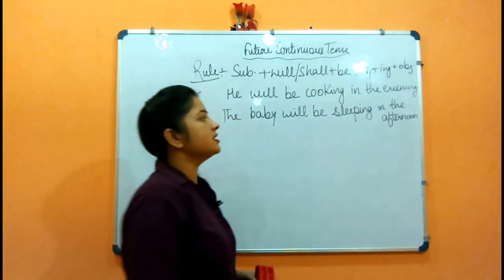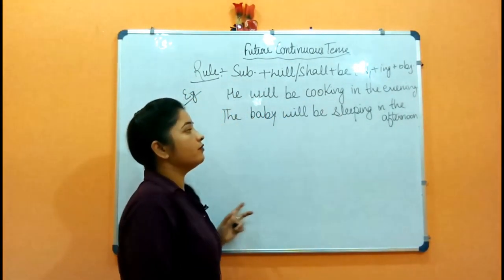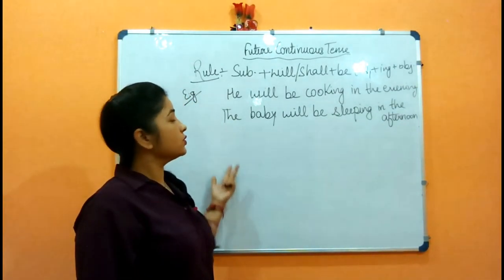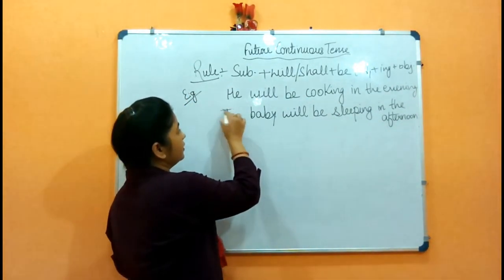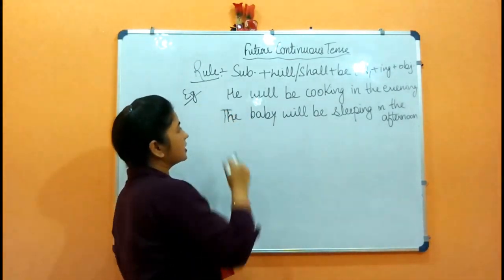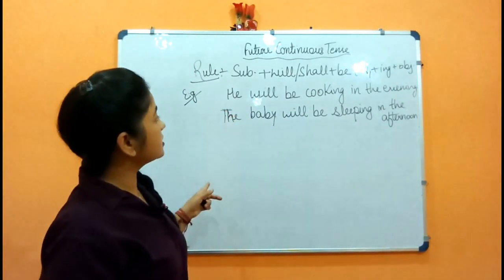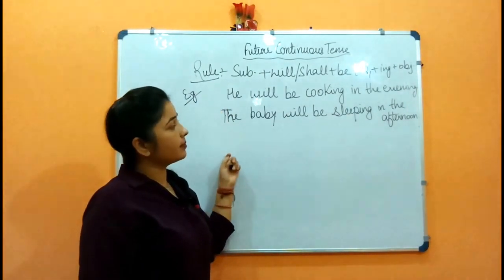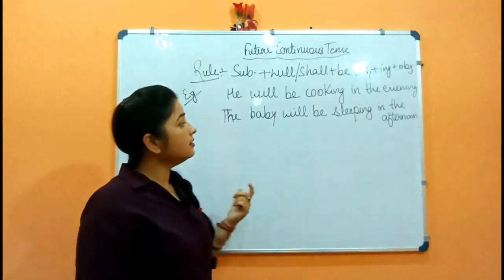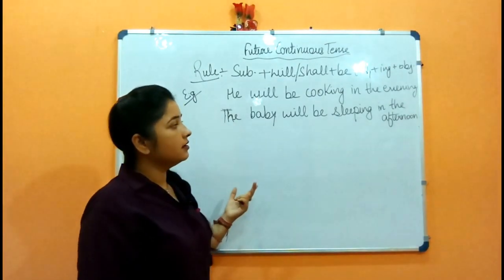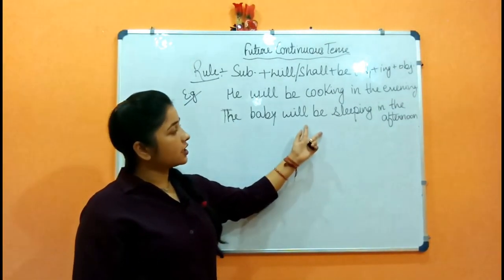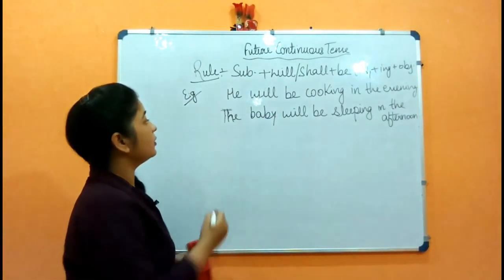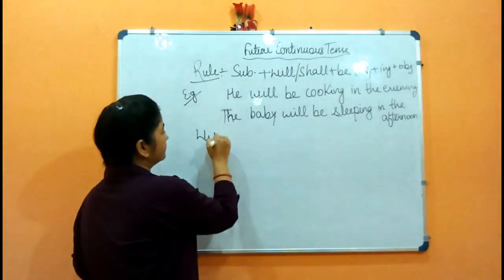'The baby will be sleeping in the afternoon' — baby जो है वो सो रहा होगा afternoon में. This is your second example. This is future continuous — specifically expressing a chance or expectation that the baby will be sleeping in the afternoon. Now let's make the interrogative of this.